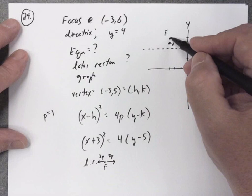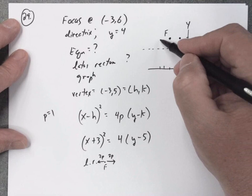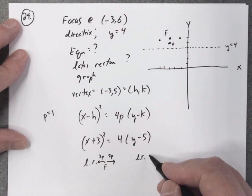So for us, we're going to move 2. So I go to the focus, I move 2 to the right, and that's one point of your latus rectum, and 2 to the left, and that's another point.